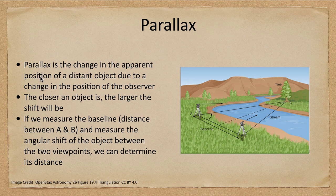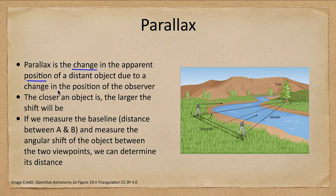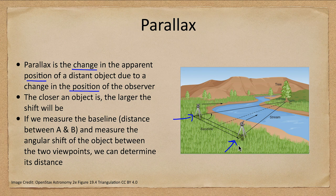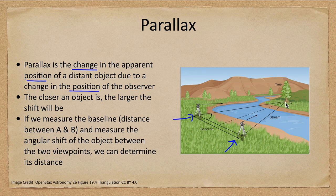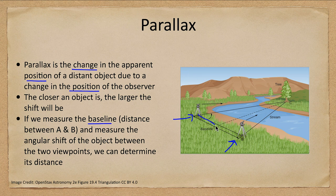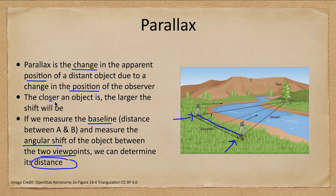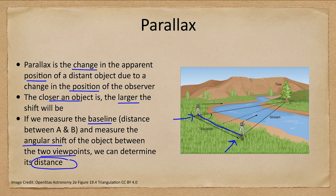So let's take a look at the method of parallax. Parallax is the change in the apparent position of a distant object because of a change in the position of the observer. So you can observe from position A here and observe again from position B, and you will see that you will have to turn your device to slightly different angles to mark the position of the tree. If we measure the baseline, which is the distance between the two measurements, and measure the angular shift of the object between these two viewpoints, we can determine distance. The closer an object is, the larger the shift we will get and the bigger the angle. So the easier it is then to measure the distance.